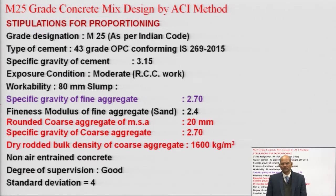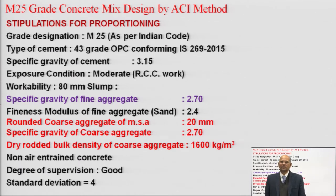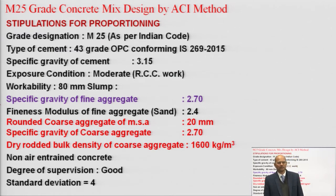There is a conversion: cylindrical strength is equivalent to about 5/4 times the cube strength, or roughly you can take 0.8 — that is, 0.8 times the cube strength will give you the cylindrical strength. You can keep that in mind.